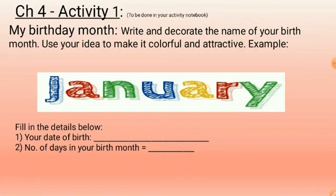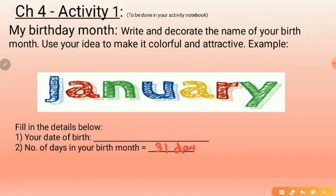Fill in the details: first write your date of birth, and then write the number of days in your birth month. For example, I have given you the example of January — January has 31 days, so I am going to write here 31 days. It depends which month is your birth month; accordingly, you are going to write the date of your birth and the number of days in that month.